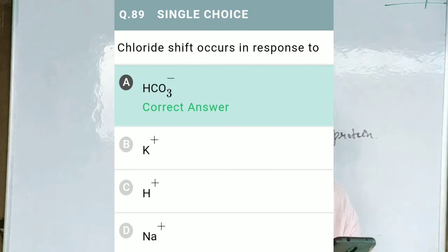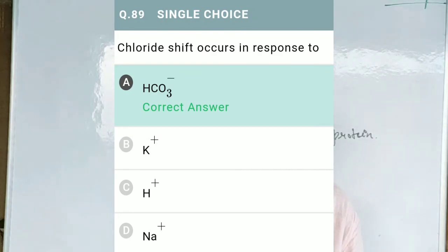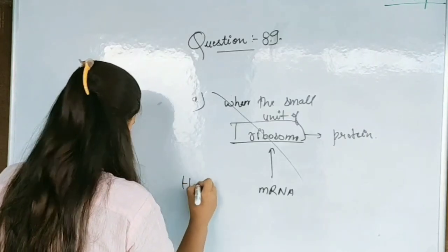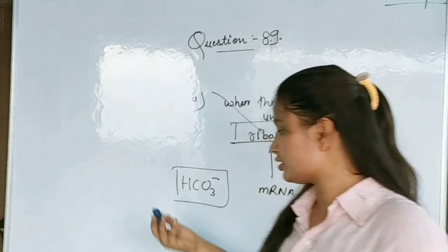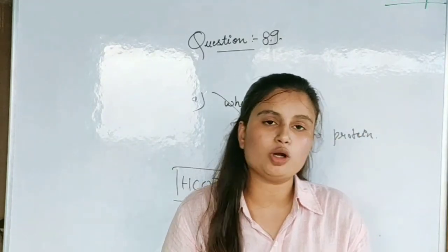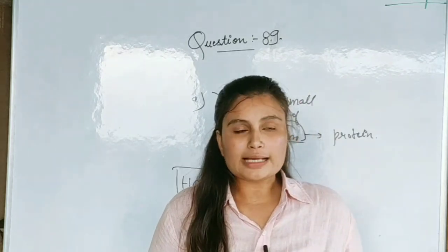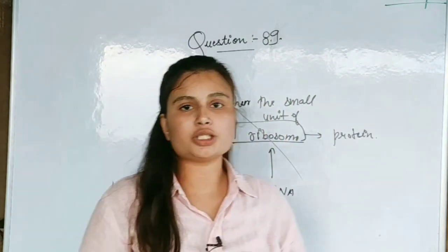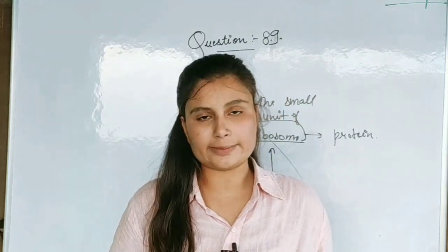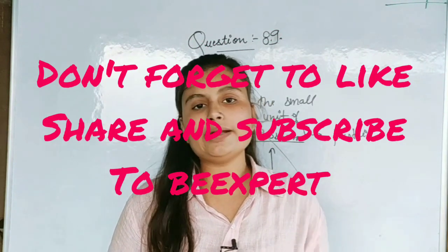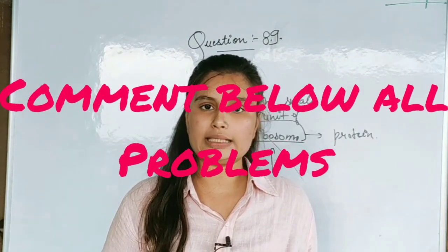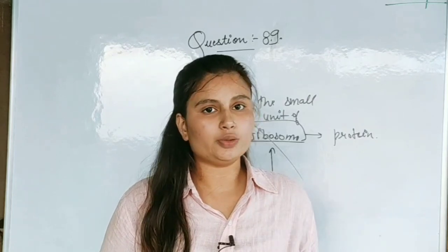Question No. 89: Chloride shift occurs in response to — Option A, H3O⁻; Option B, K⁺; Option C, H⁺; Option D, Na⁺. The correct option is that chloride shift occurs due to HCO3⁻. That is the last question, as question 90 is not present in the test paper. Please like, share, and subscribe to our YouTube channel Beexpert, and comment below all your doubts and queries so we can help you in further videos. Thank you.